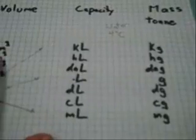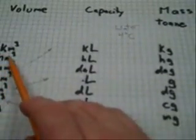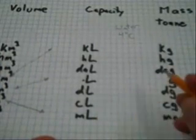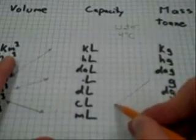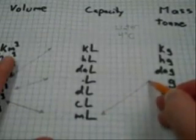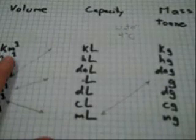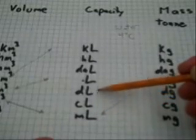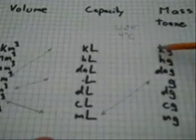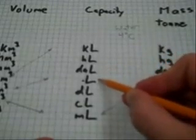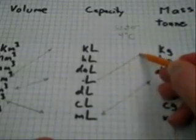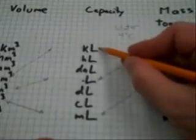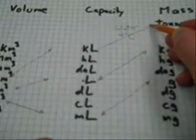The connection is somewhat similar to the connection between volume and capacity. One milliliter of water at 4 degrees Celsius will weigh 1 gram. If the decimal moves three spaces to get up to liters, it must also move three spaces here. Therefore, one liter of water will weigh 1 kilogram. And one kiloliter of water will weigh 1 metric ton.